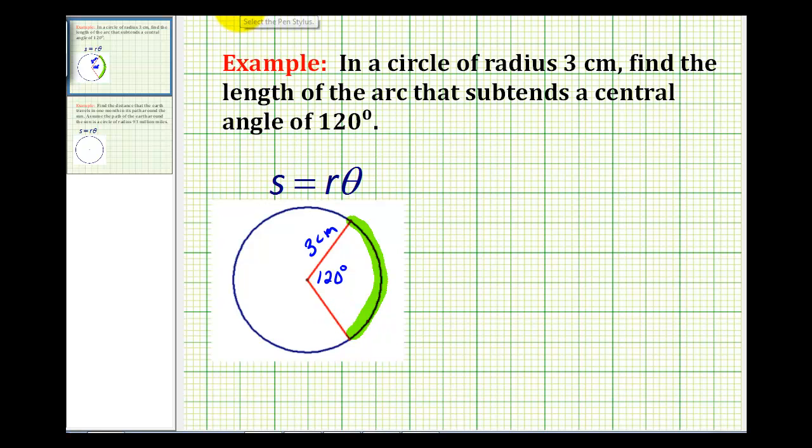The formula for arc length is S equals R times theta, where S is the arc length, R is the radius, and theta is the measure of the central angle, which must be in radians.